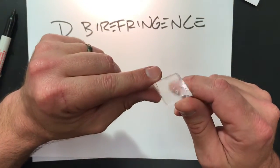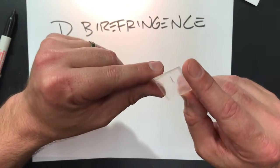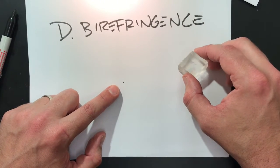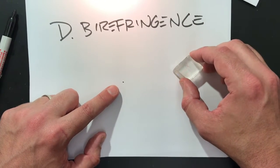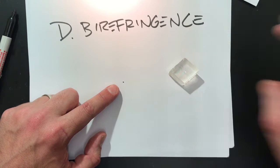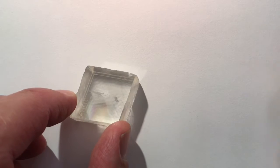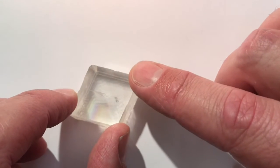What I have here is a piece of Iceland spar or calcite crystal and a little dot on my paper. Let's zoom in and take a look. There's our dot, and with the calcite over it now we have two images.